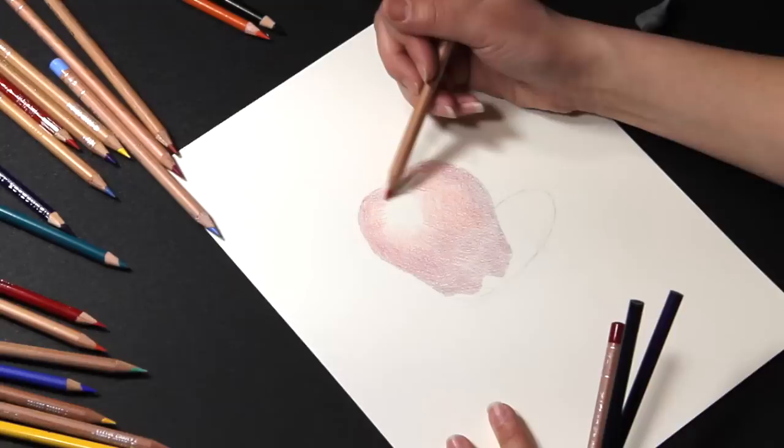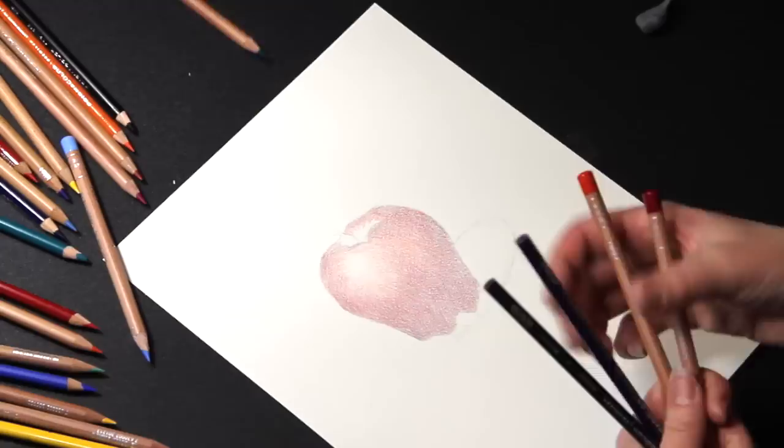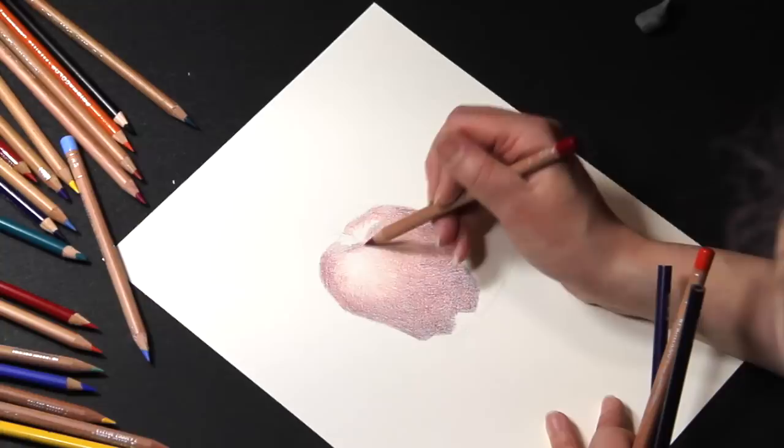I always encourage artists to look for a color in the shadow areas, rather than immediately reaching for dark browns or black. For example, the shadows of this apple are quite dark, but rather than using black, which can make my colors look muddy, I'm going to use purple and indigo blue instead.